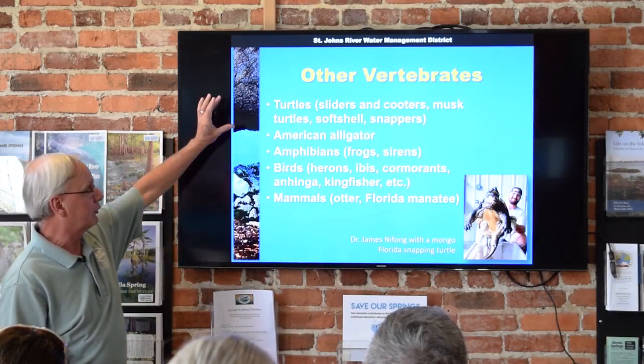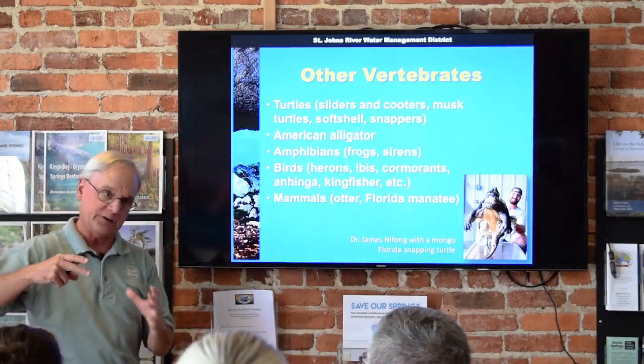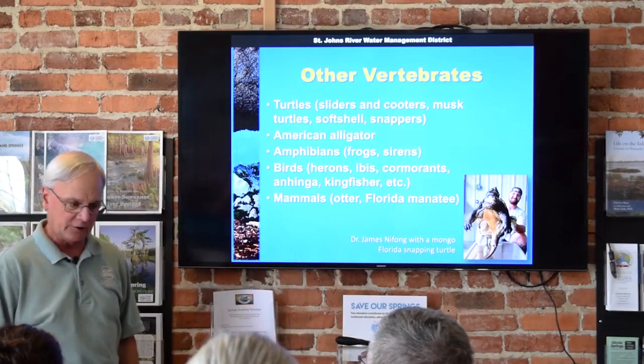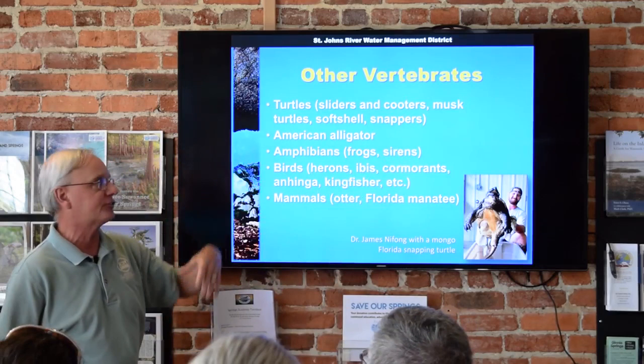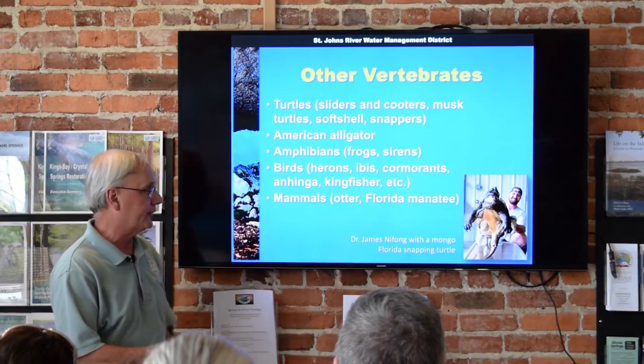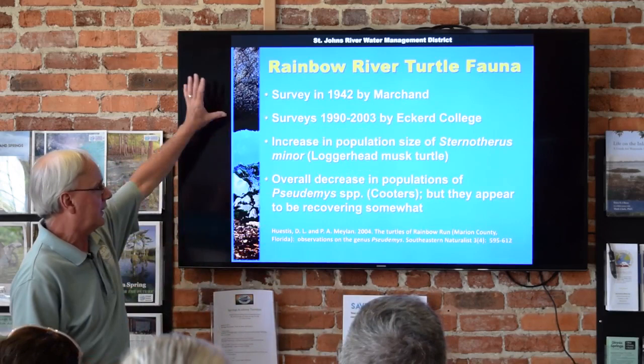Other vertebrates — quickly. Turtles, alligators, amphibians including various frogs and sirens. Probably the signature amphibian for spring runs is the pig frog — a larger frog people gig for frog legs, and as you go by a marsh area you hear their distinctive call more than you see them. Sirens are nocturnal legless salamanders. Birds include various fish-feeding species. Mammals include otter and Florida manatee. There's also the biggest Florida snapper I've ever seen, which came out of the Silver River from turtle survey work we're doing with the University of Florida.